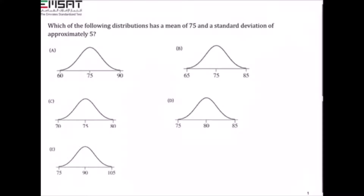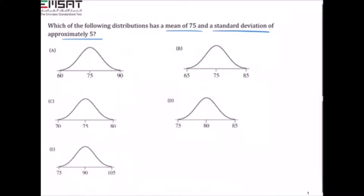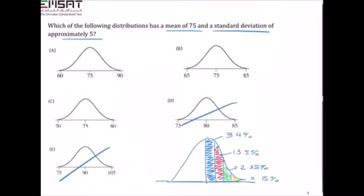The next question asks which of the following distributions has a mean of 75 and a standard deviation of approximately 5. Options D and E are not required to be looked at. Our graph has to have a mean of 75, meaning it's either option A, option B, or option C. Knowing that our mean is 75, we need to add 5 each time going to the right side as our standard deviation is 5.